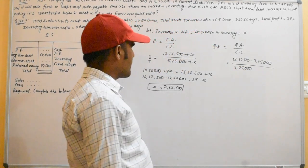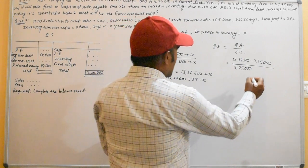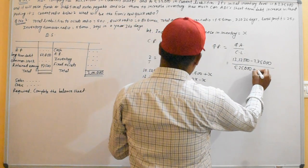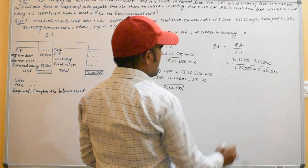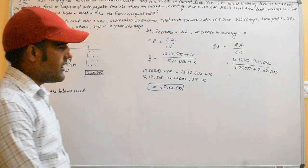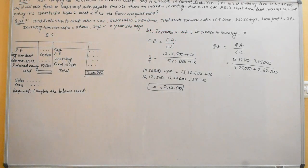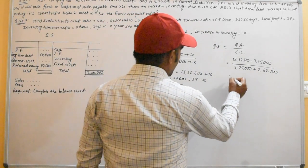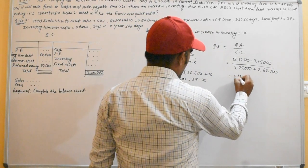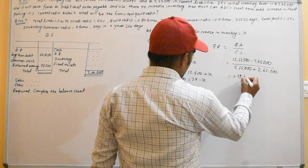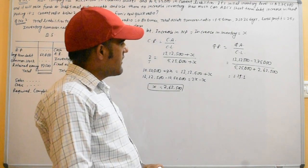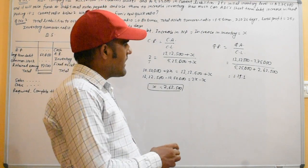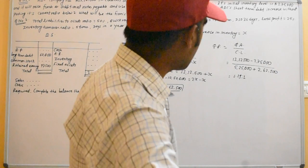The new quick ratio works out to 1.19 times.